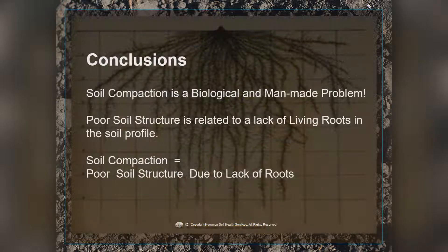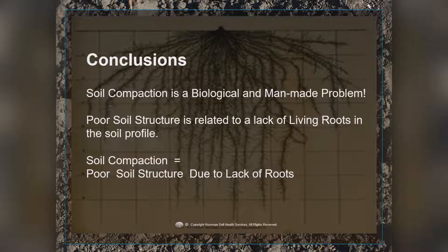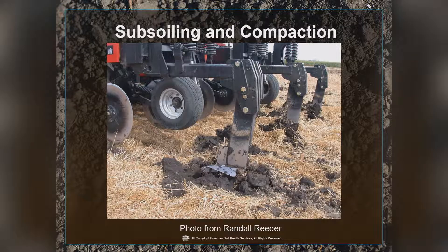Here are some conclusions. Soil compaction is a biological and man-made problem. Poor soil structure is related to a lack of living roots in the soil profile, which is why we don't have good macroaggregates. Poor soil compaction is due to poor soil structure, lack of roots, and excess tillage, which burns up the organic matter in the soil.